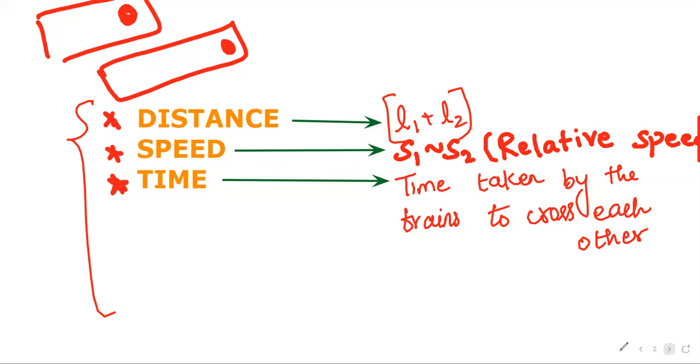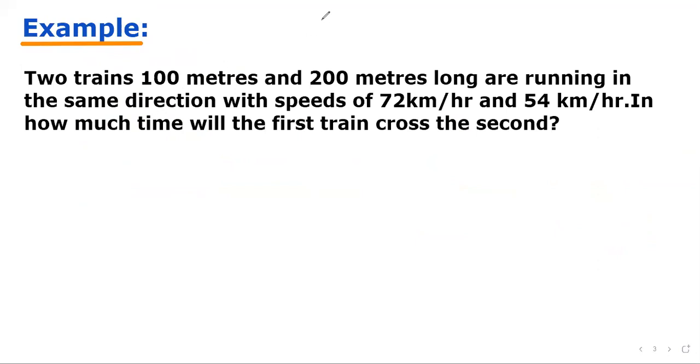Let's see an example problem. Two trains 100 meters and 200 meters long are running in the same direction with the speeds of 72 kilometer per hour and 54 kilometer per hour. In how much time will the first train cross the second?